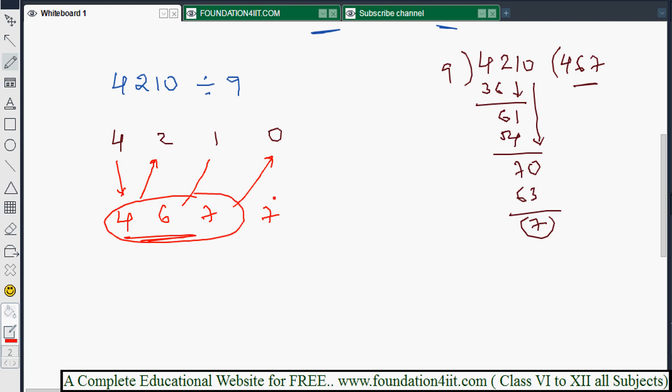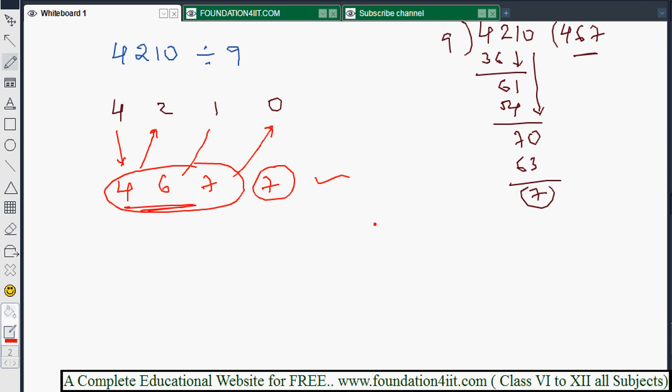That's it. 467 is the quotient and 7 is the remainder. This is the way we can do it. Now let's go for some bigger numbers to see the difference.